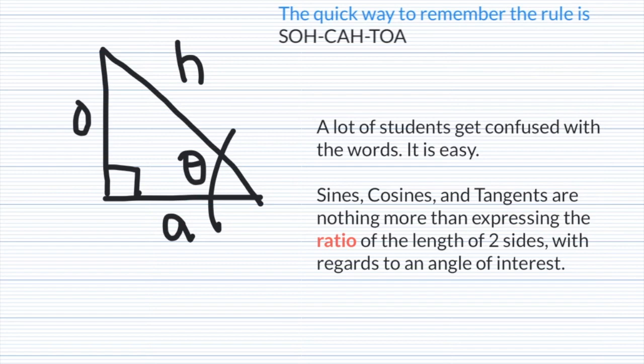A lot of students get easily confused with the words, but it's easy. Sines, cosines, and tangents, while they're difficult words to say and they're not common in our vocabulary unless you're a math or science person, they're nothing more than expressing the ratio of the length of two sides with regards to the angle of interest.